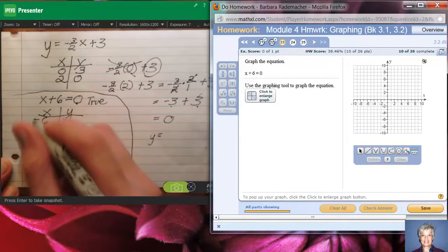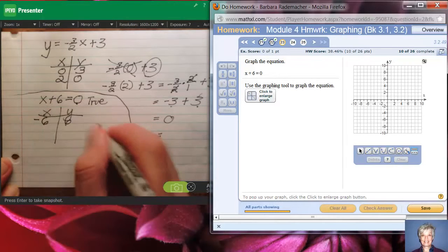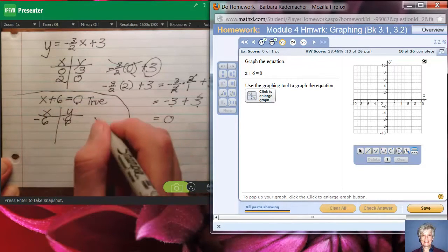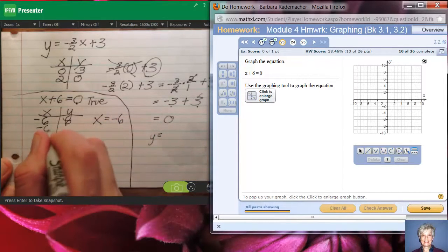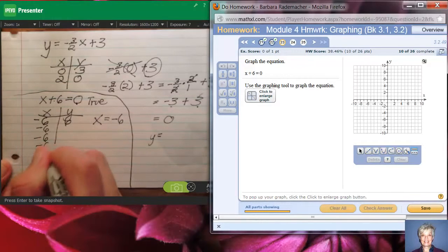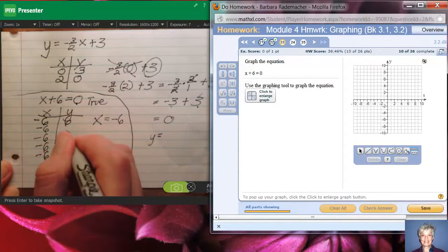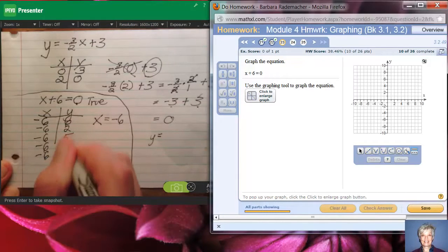But as it happens, if you subtract 6 from both sides, this is the line X equals negative 6. What that says is that X has got to be negative 6 no matter what, and you can choose any old numbers you want.